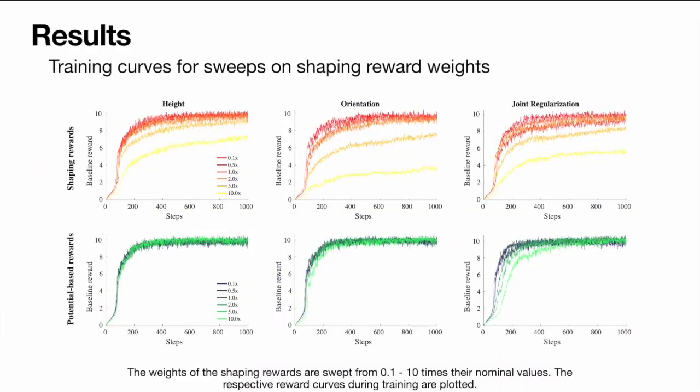We repeat the sensitivity analysis with several commonly used shaping rewards and find that PBRS rewards are consistently easier to tune. We find that using potential-based rewards is substantially more robust to the weights specified, mitigating the task of tuning and balancing the rewards against each other.